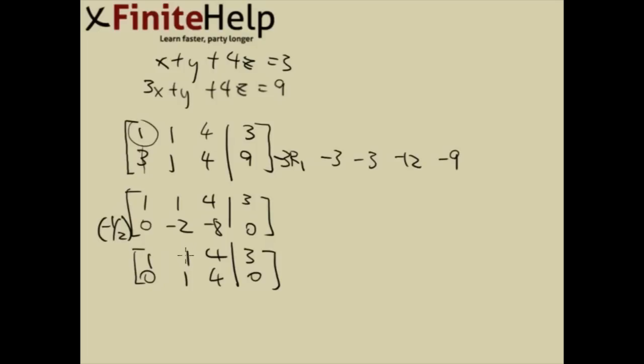I'm going to make this a leading 1 and get rid of this 1. I'll do that by adding negative 1 times row 2 to row 1. Negative 1 times row 2 is going to be 0, negative 1, negative 4, and 0. Row 2 stays the same. Row 1 becomes 1, 0, 0, and 3.